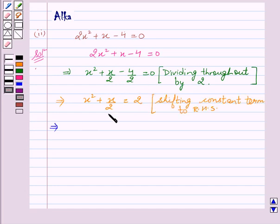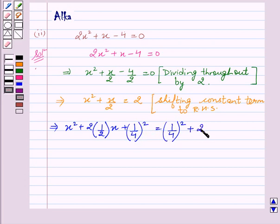Now, we will add (1/4)² to both sides, left-hand side and right-hand side. This can be written as x² + 2 × (1/2) × x + (1/4)² = (1/4)² + 2.